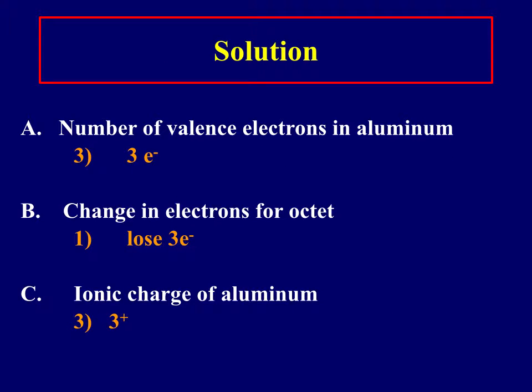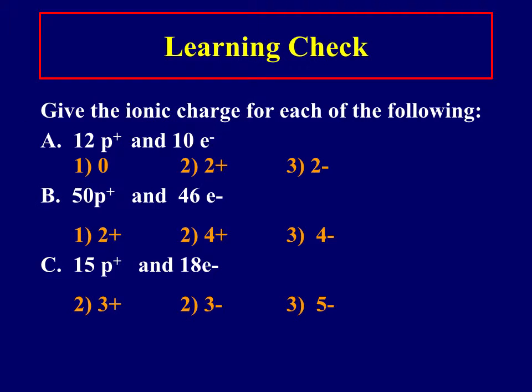All right, were you right? If you are, an awesome job. If not, we're going to do a little bit more practice. So given the ionic charge for each of the following: 12 protons and 10 electrons. So these are subtraction problems. So I'll do the first one with you. 12 minus 10, that would be 2+. So the answer would be a positive 2 charge. All right, what if you had 50 protons and 46 electrons? You're right, you would have the charge of 4+. Now what if you had 15 protons and 18 electrons? Good, that would be a charge of 3 minus. You have three extra electrons.